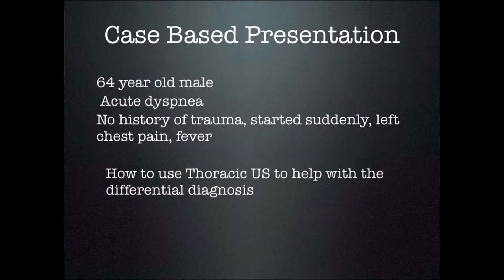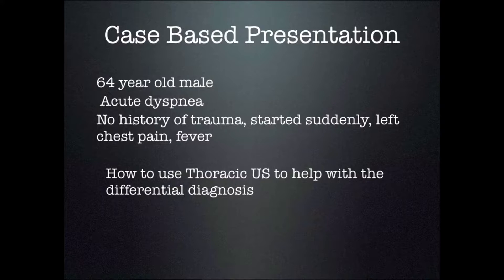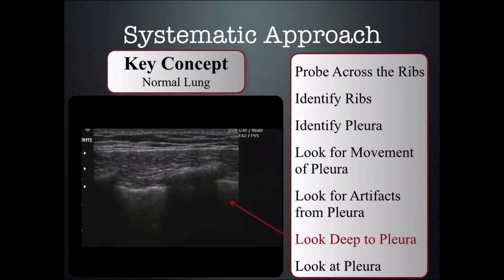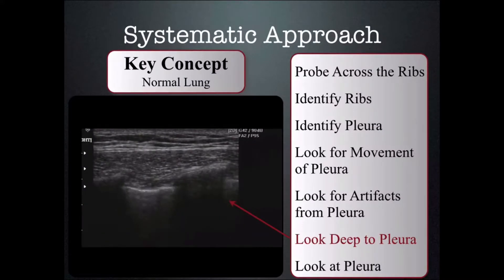Here's another case. A 64-year-old male comes in with acute shortness of breath, no history of trauma, it started suddenly, left-sided chest pain, and fever. We place the probe across the ribs, identify the ribs, identify the pleura, look for movement, then look for artifacts arising from the pleura — we see none here. Then we want to look deep to the pleura to see if that gives us any information.